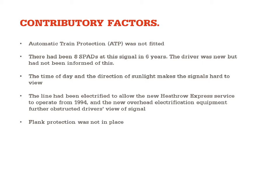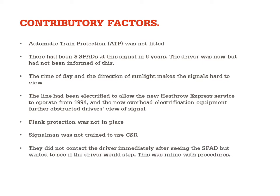In addition, flank protection was not in place — flank protection ensures that if a train passes a signal at danger, it can't be put on a collision course with another train that has right of way through that junction. The signalman was also not trained to use the cab secure radio — in this case it was fitted but the signaller was not trained to use it. Furthermore, the signaller did not contact the driver immediately after seeing the SPAD but waited to see if the driver would stop, which was actually in line with procedures at the time.